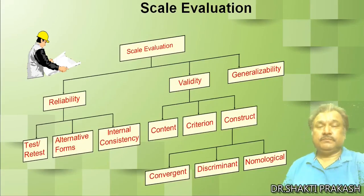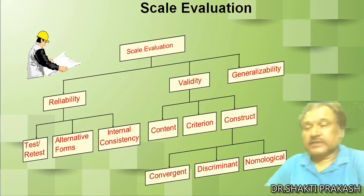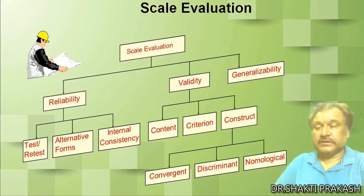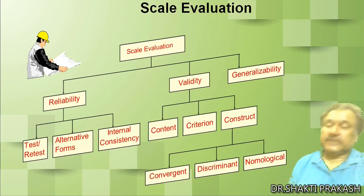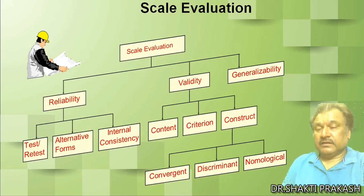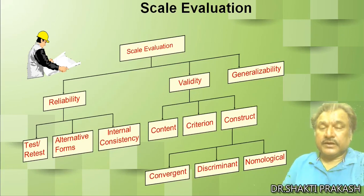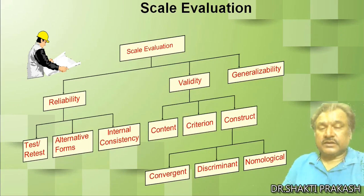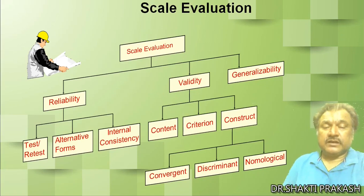What is scale evaluation? Scale evaluation is first divided into three parts: reliability, validity, and generalizability. Reliability is again classified into three parts: test-retest, alternative forms, and internal consistency. Validity is again divided into content, criterion, and construct. Construct is further divided into convergent, discriminant, and nomological. We will discuss all parts of this scale evaluation in detail.